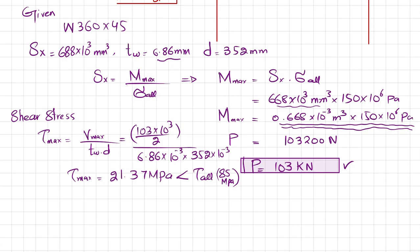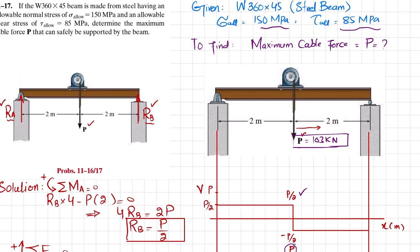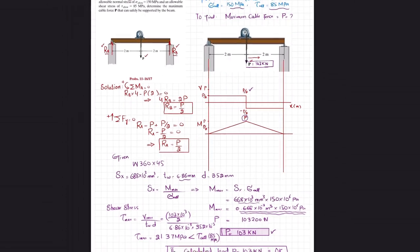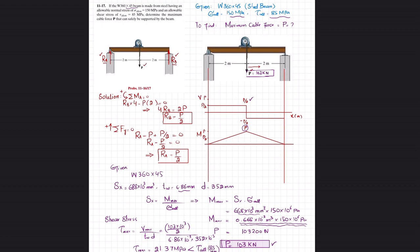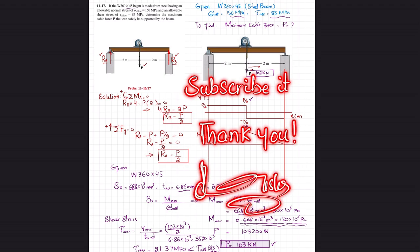Therefore, the calculated load P = 103 kN is safe and satisfies both the normal stress and shear stress conditions given in the problem. If you have any questions, ask in the comment section. Subscribe and press the bell icon for notifications. Thank you for watching and supporting.